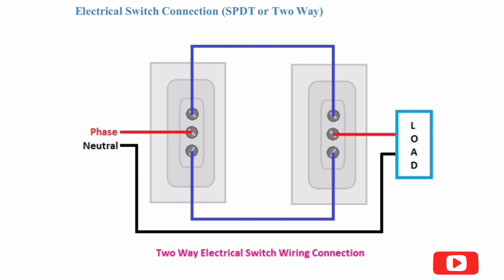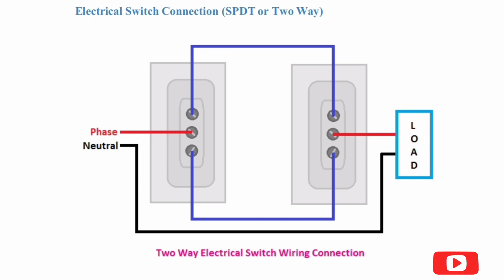Next, we learn about electrical switch connection for the SPDT or two-way switch. Here you can see two switches taken for the wiring connection. Connection procedure: A SPDT or two-way switch has three terminals. Step 1: Connect the neutral terminal of the power supply to the neutral terminal of the load directly. Step 2: Connect the phase or live terminal of the power supply to the middle terminal of switch 1. Step 3: Connect the phase or live terminal of the load to the middle terminal of switch 2. Step 4: Connect both switches to each other as shown in the diagram.